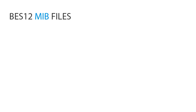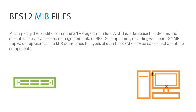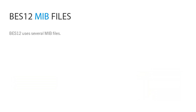BES-12 MIB files specify the conditions that the SNMP agent monitors. A MIB is a database that defines and describes the variables and management data of BES-12 components, including what each SNMP trap value represents. The MIB determines the types of data the SNMP service can collect about the components. BES-12 uses several MIB files.